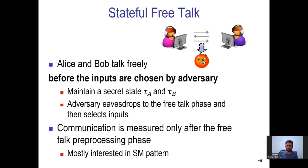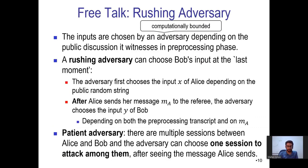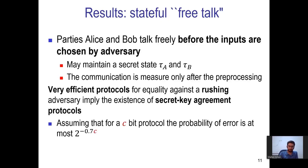The second model is the stateful free-talk model. In this model, Alice and Bob can communicate freely before the inputs are chosen. Then the inputs are chosen by the adversary who sees their communication, and now the communication is measured. We consider an adversary with more power: he chooses the input for Bob at the last moment and can also wait for an opportunity to attack. We show that protocols that are both resilient to such a powerful adversary and also very efficient — where the error is exponentially small in the communication — imply the existence of secret key agreement protocols.